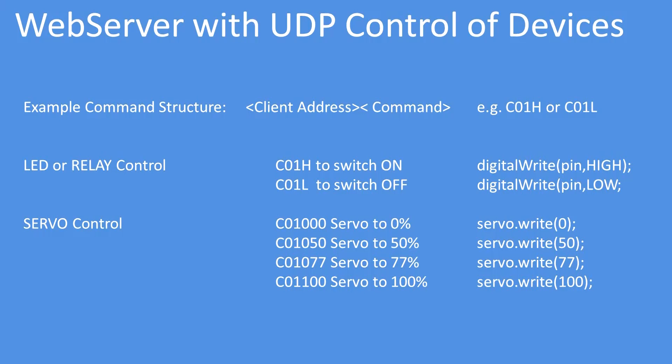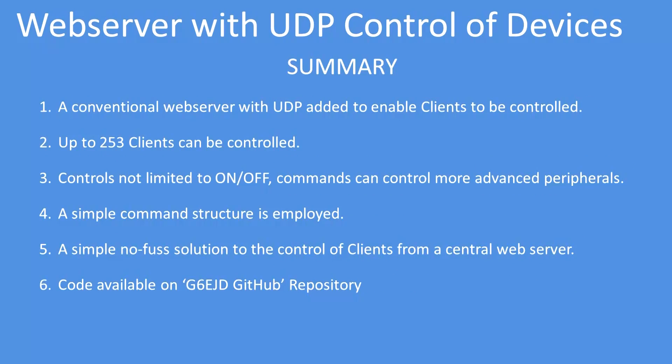For servo control, you extract the command element of the instruction that's been received and send that to the servo, light dimmer, or whatever peripheral device you may have.